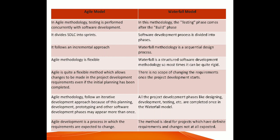Agile is a flexible method where changes are accepted at any stage of the project, whereas the Waterfall model is not as flexible, because each phase has a defined set of criteria that must be completed before entering the next phase.